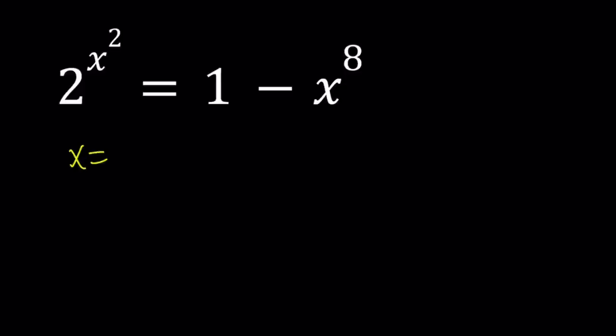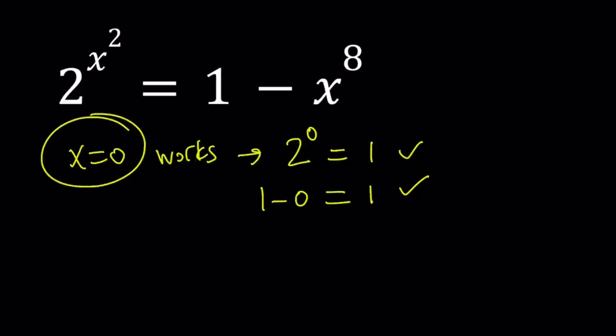So x equals 0 works. Why? Because if you replace x with 0 on the left hand side, you get 2 to the power of 0, which is 1. If you replace x equals 0 on the right hand side, you get 1 minus 0, which is equal to 1. So they check. x equals 0 is a possible solution.